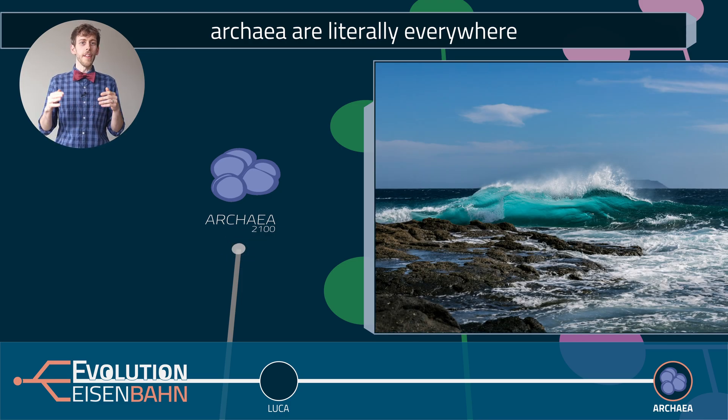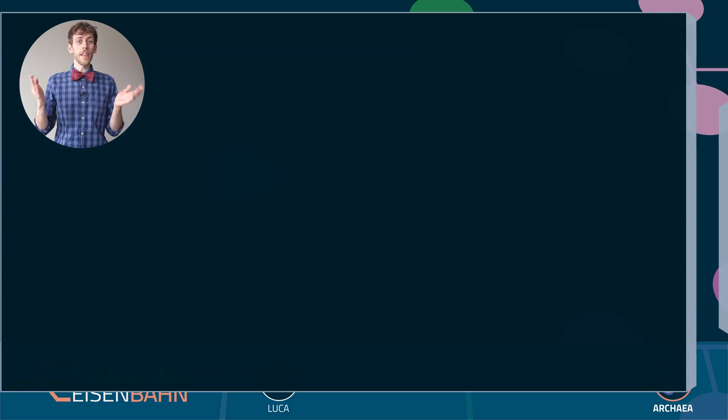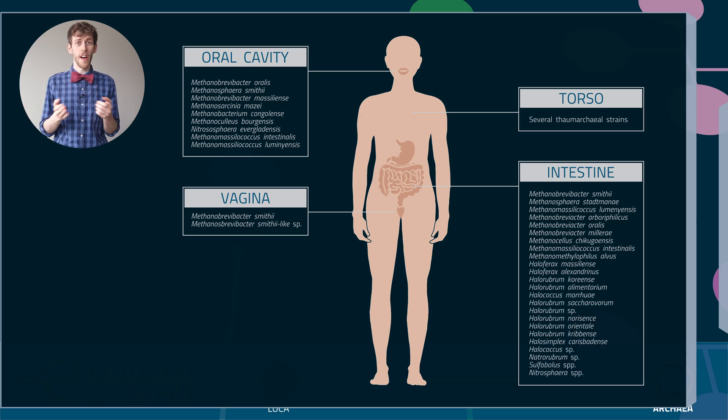And they are abundant too. We now estimate that they make up at least 20% of all microbial cells in the entire ocean. And in the sea floor, there are way more archaea than bacteria. And we found dozens of species living in and on humans, with more being described all the time.